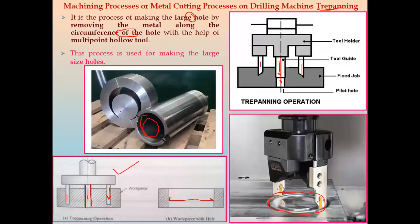These are all the operations that can be performed on a drilling machine: first drilling, then reaming, then boring which includes counter boring and counter sinking, then spot facing, then tapping to produce internal threads, and finally trepanning. All these cutting processes are generally used to produce a cylindrical or circular hole. Thank you for watching this video; please subscribe to the channel and like the video.